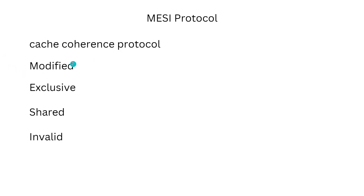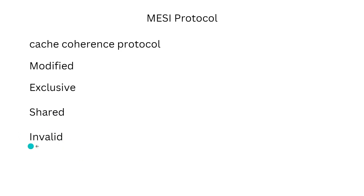Modified: The cache line is exclusive to one processor and the processor has modified the data; the modified data has not yet been written back to memory. Exclusive: The cache line is exclusive to one processor and the data has not been modified; it is consistent with the data in memory. Shared: The cache line is shared between multiple processors and the data has not been modified; it is consistent with the data in memory. Invalid: The cache line is not valid, meaning it does not contain valid data.